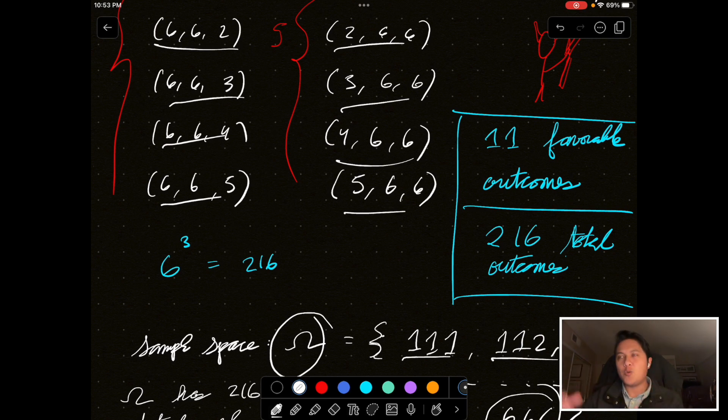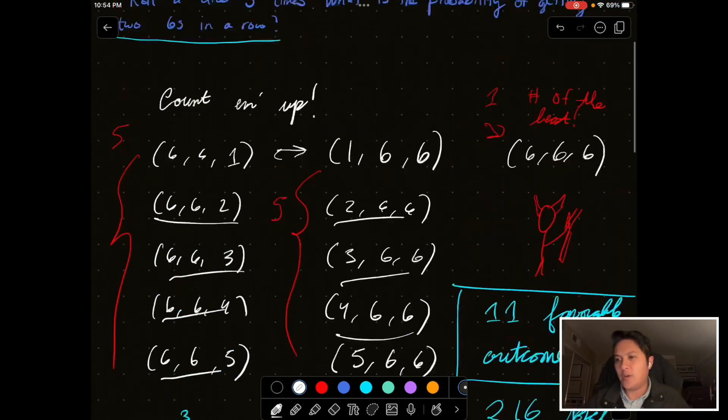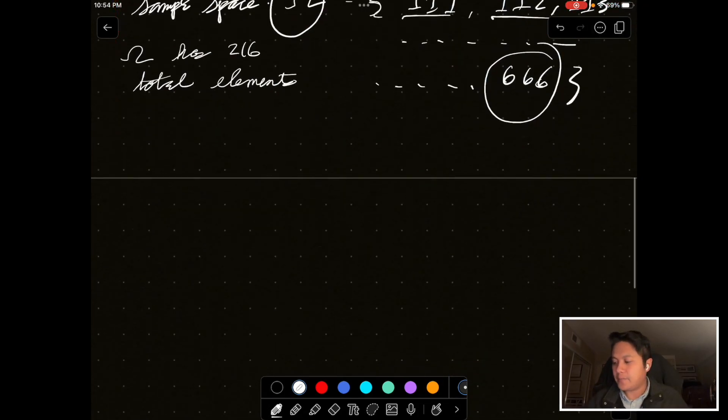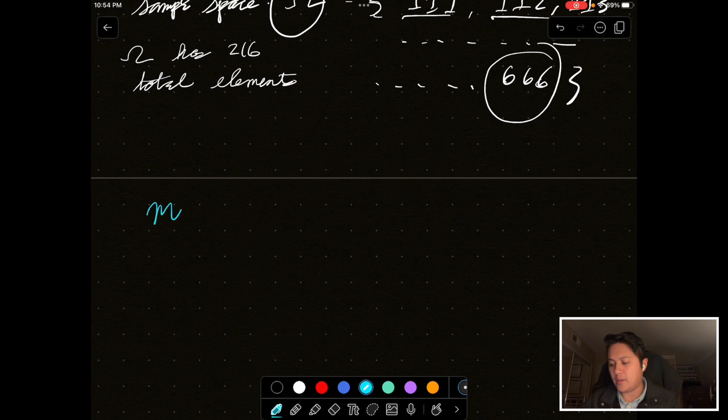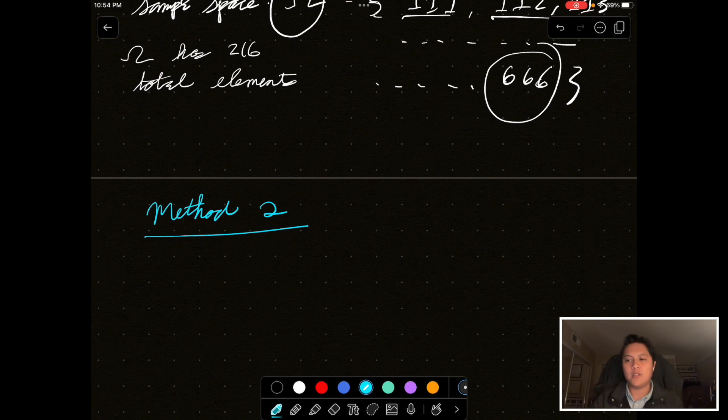And, maybe doing it more, I don't know what the right word is, but doing it without counting. At least, counting all the possible ways explicitly like this. So, let's go with method 2. Method 2. So, let's think about this. What is the probability we get two sixes in a row?